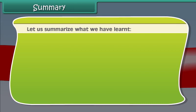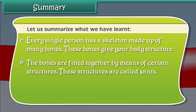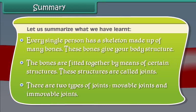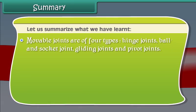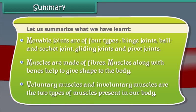Let us summarize what we have learned. Every single person has a skeleton made up of many bones; these bones give the body structure. The bones are fitted together by structures called joints. There are two types of joints: moveable and immovable. Moveable joints are of four types: hinge joints, ball and socket joints, gliding joints, and pivot joints. Muscles are made of fibers and along with bones help to give shape to the body. Voluntary muscles and involuntary muscles are the two types of muscles present in our body.